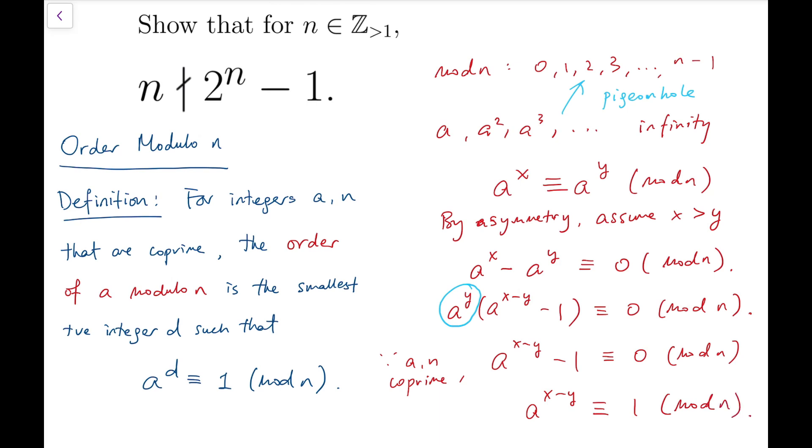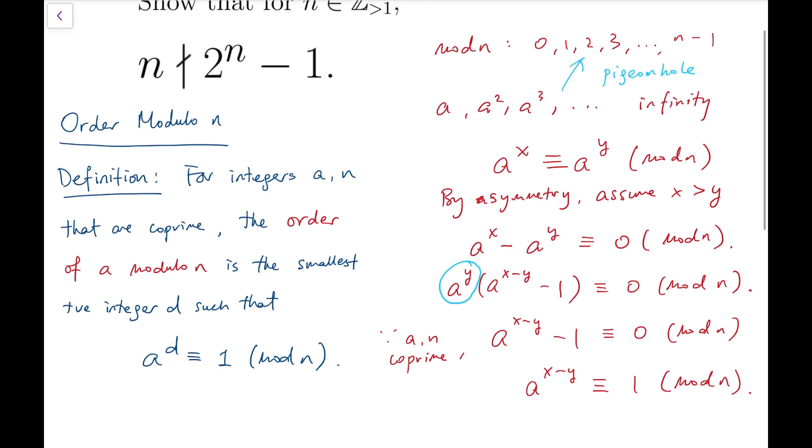So that means we must always be able to find a positive integer such that a to the power of that number is congruent to one mod n. And when we pick the smallest of such numbers, then we call that the order of a mod n.